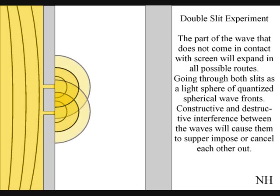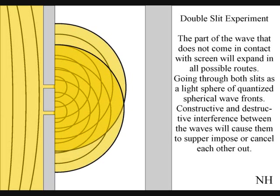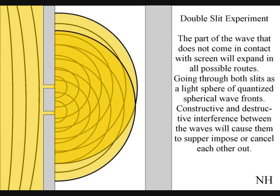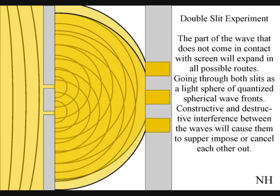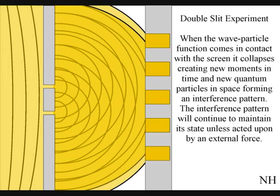Interference between the waves will cause them to superimpose or cancel each other out. When this wave function comes in contact with the screen, it will collapse, creating moments of time and quantum particles in the shape of an interference pattern. When the observer turns on a detector to determine which slit a photon passes through, the interference pattern collapses.